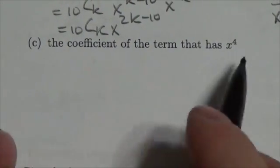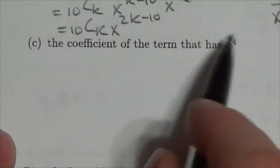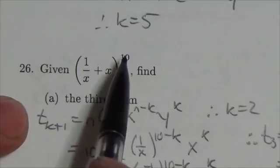Hi everybody. So here's a question again about binomial expansion. I'm asking for the coefficient of the term that has x to the fourth in it, and this is the binomial that we're expanding: 1 over x plus x to the 10.